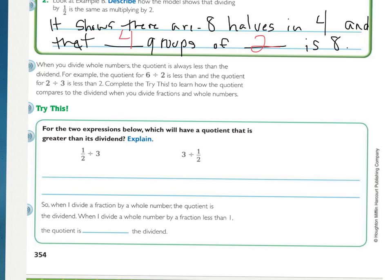So now we need to remember that when we divide whole numbers, like 6 divided by 2, our answer is less than our dividend, 6. And another example, 2 divided by 3, our answer is going to be less than 2, which is our first number, our dividend. That one would end up being a decimal or a fraction.